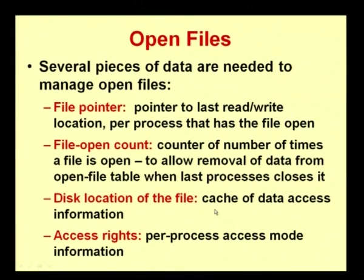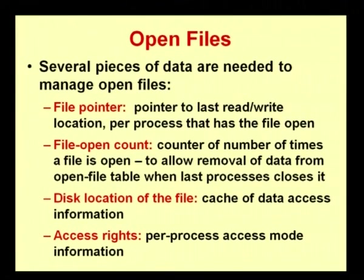The next attribute is disk location — the cache of data access information. Cache is a memory buffer that tracks how many times data is accessed and placed in the buffer. Then we have access rights: you can allow a user to only read the file, or grant full access — meaning the user can write, type, delete, modify, or insert content.